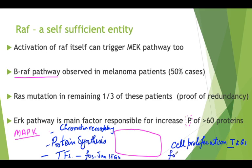When FOS and JUN combine together, that complex is generally called AP1. Do remember this — the complex formation of these two transcription factors inside the nucleus is also called AP1. For protein synthesis, the signals transmitted to the nucleus generally contain elongation factor EIF4.